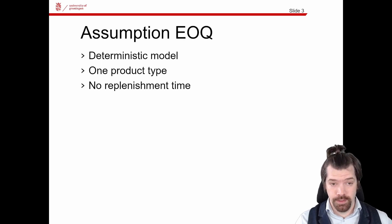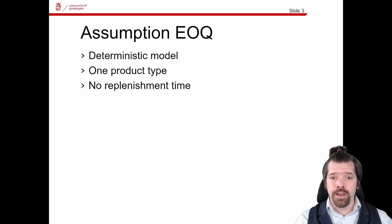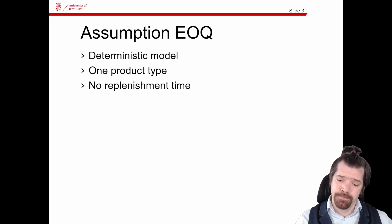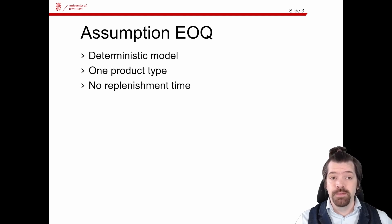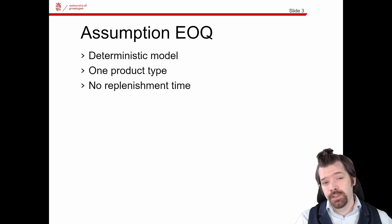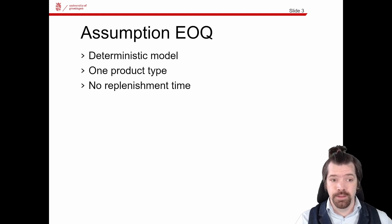Let me start with the assumptions of the Economic Order Quantity. On the one hand, it is a completely deterministic model — that means we do not include or incorporate customer behavior such as a distribution on the inter-arrival times. On the other hand, it is assumed that replenishment takes place immediately, so you get the information that the inventory is empty and you are immediately able to replenish with no delay, and no processing time distributions are incorporated in the EOQ model, which goes hand in hand with the replenishment time.